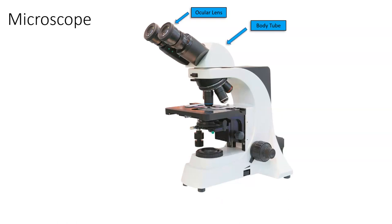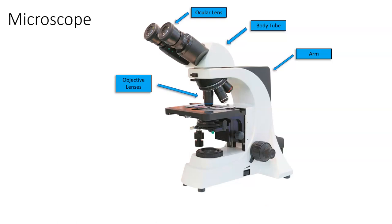Then you have the body tube, which is where the light will travel through. It also houses the prism, which we'll get to when I dive into the internal structures. Then you have the arm — that's just a support mechanism, and it is the piece of the microscope that you will hold when you carry it. You have the objective lenses, which range in magnification from about four times to 100 times. The biggest objective is an oil immersion lens.